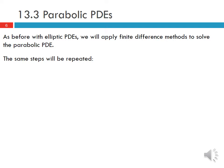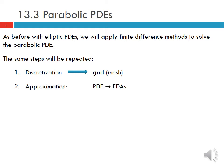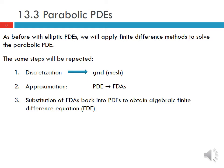As before with elliptic PDEs, we will apply finite difference methods to solve the parabolic PDE and the same steps will be repeated. First we will discretize the domain to get a finite difference grid or mesh. Then we will approximate the PDE with a finite difference approximation, substitute these finite difference approximations back into the PDEs to obtain algebraic finite difference equations, and then solve the finite difference equations.